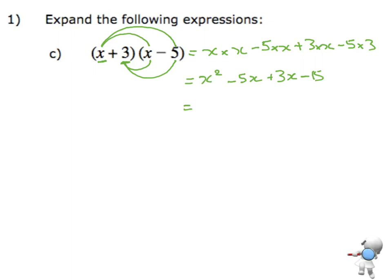I've got the two pieces in the middle here: minus 5x plus 3x. I'm going to simplify that, which gives me x squared take away 2x take away 15. And there's my answer.